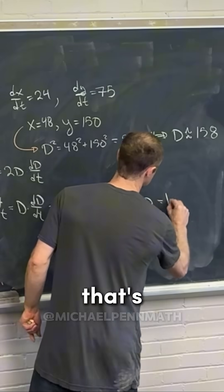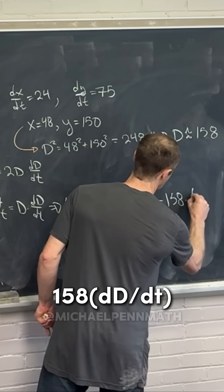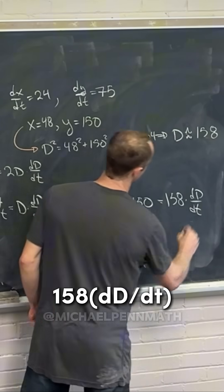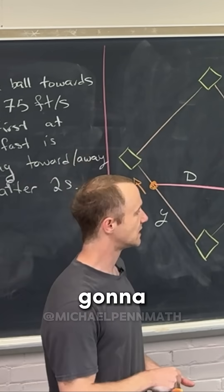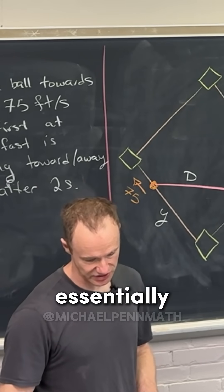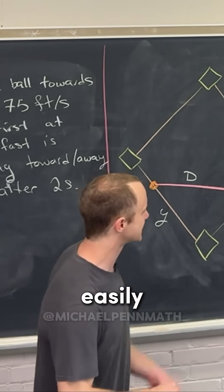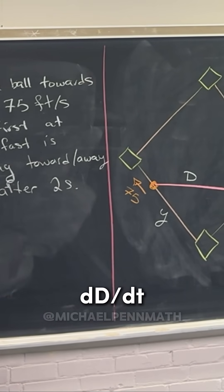That equals d times the derivative of d, so that's going to be 158 times the derivative of d. I'm not going to do all the arithmetic—that takes us essentially to the end. We can easily solve for dD/dt.